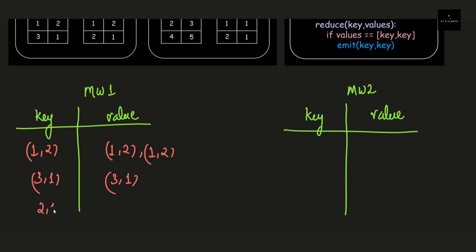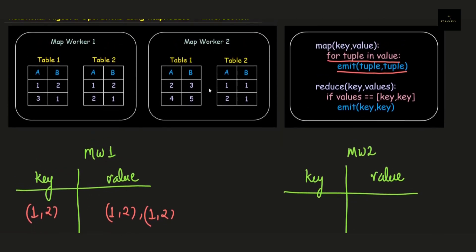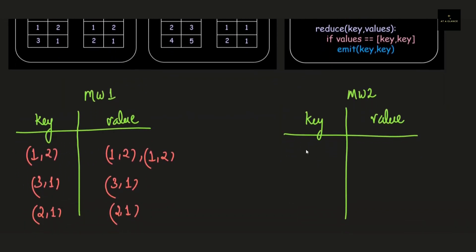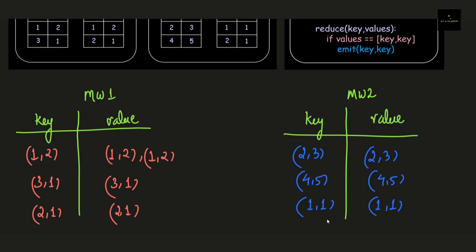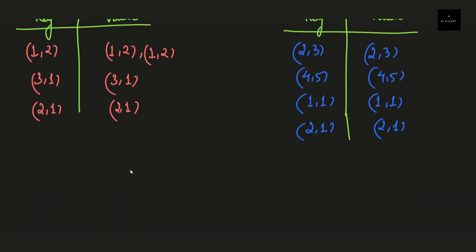The third record (1,2) is already present inside our database, so we'll just append the tuple (1,2) in the value part. Next, we have (2,1) — we'll place it in a new key-value pair. We are done with converting all the records from MapWorker 1. Now we'll perform the same operation on MapWorker 2. None of the tuples have got repeated in MapWorker 2, so we'll be writing four different key-value pairs for all four records. This will be the final result of this particular step.